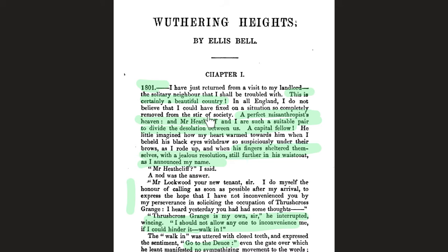Lockwood has come here because, as he says, he could not have fixed on a situation 'so completely removed from the stir of society.' He wants to get away from something that's happened — he wants a bit of quiet time, so he's renting a house. He must be very rich because Thrushcross Grange is massive. He's obviously from a wealthy background and he's not from around these parts. It's in Yorkshire, in the Yorkshire Moors — I'm guessing he's probably a southerner of some kind.